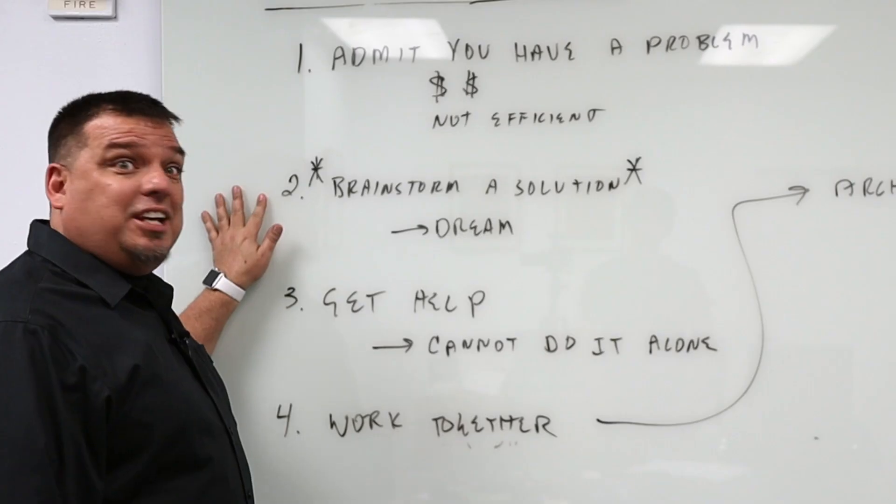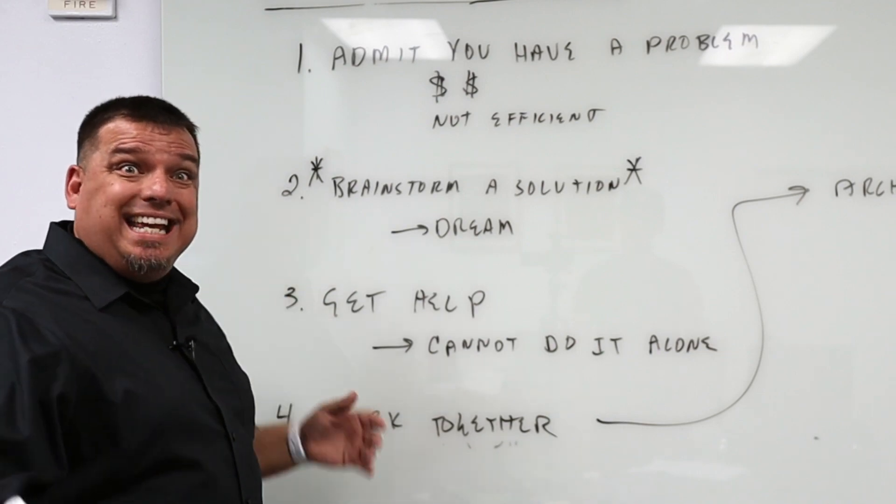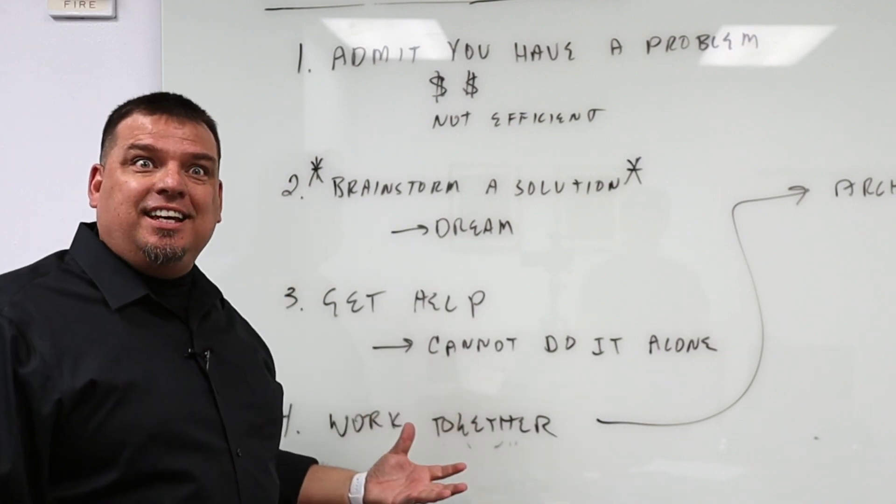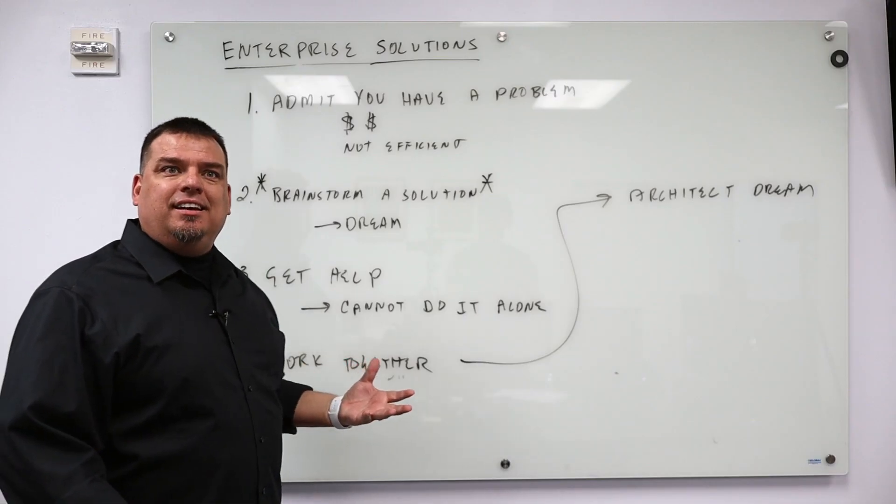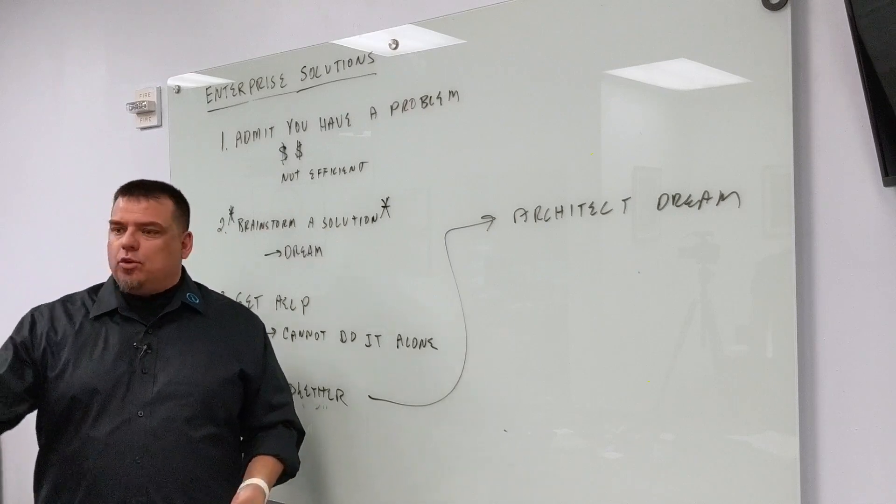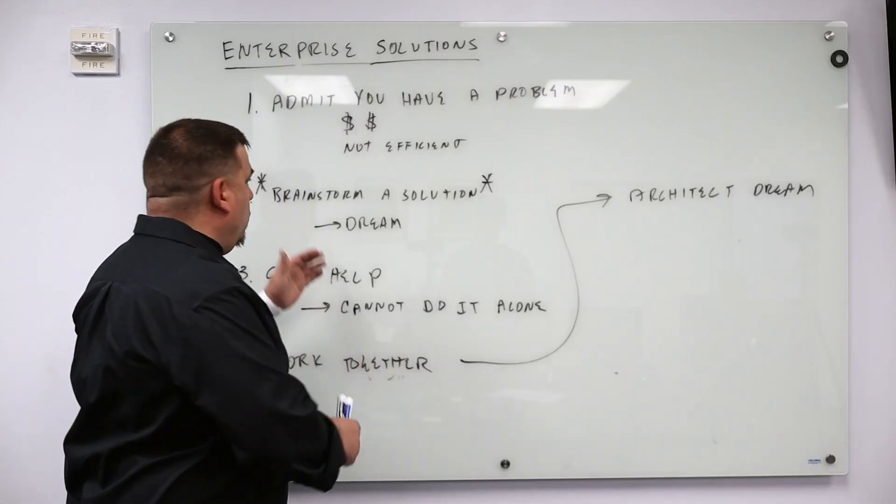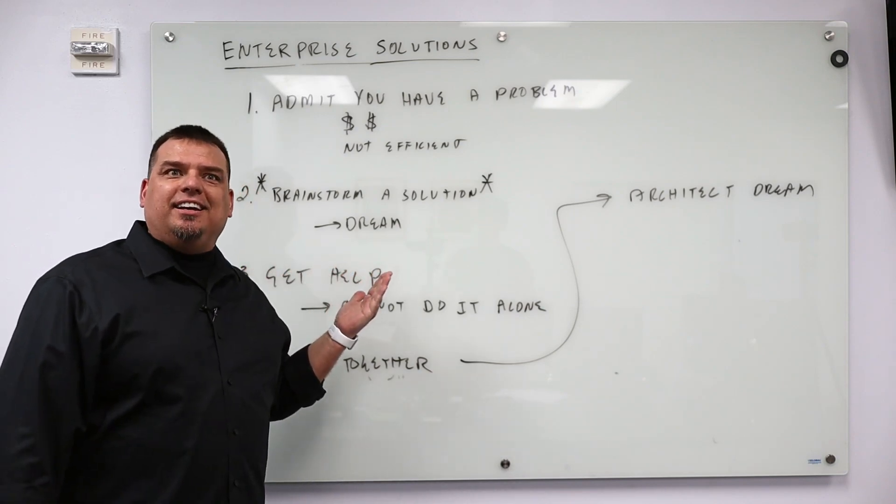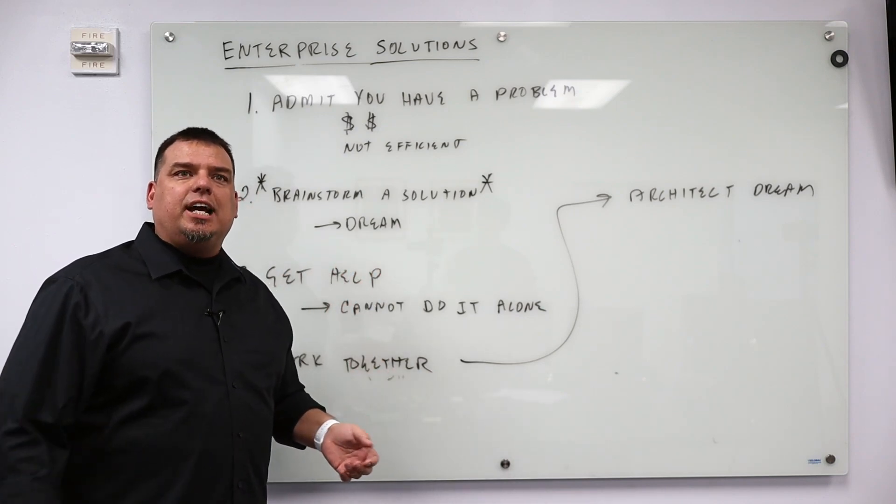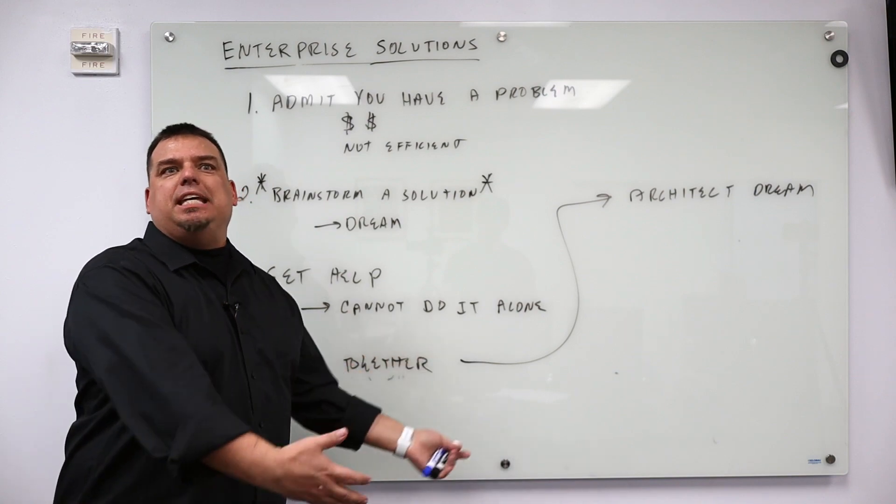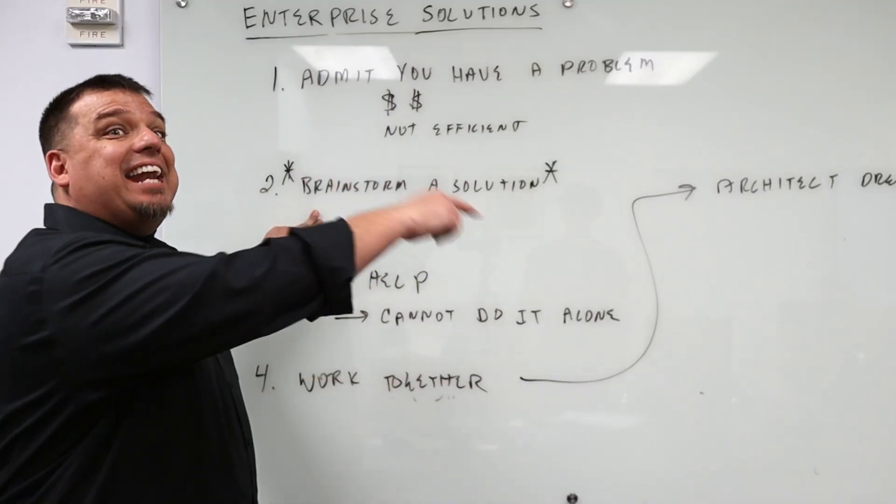Number two, you've got to brainstorm a solution. What is my perfect business? What would it look like? If I'm the CEO of a large Fortune 500 company, a Fortune 500 manufacturer, what would the perfect business look like? What would the perfect operations look like? What would my perfect day be? Brainstorm it. Put that on paper.